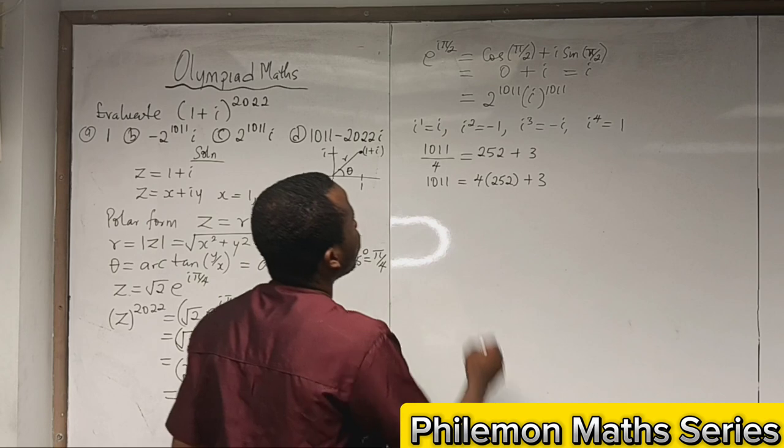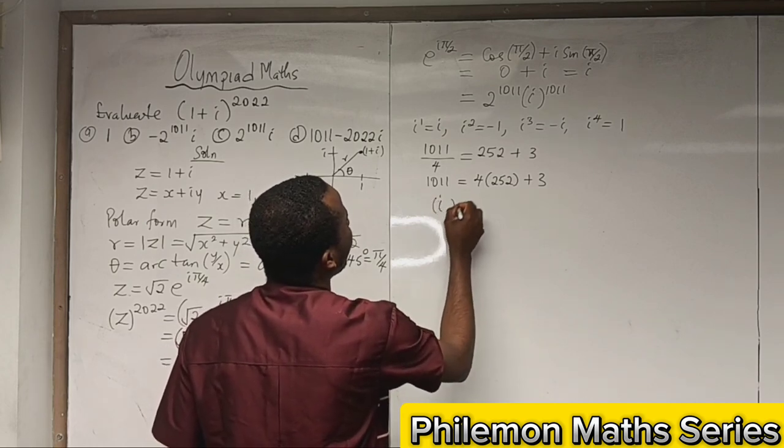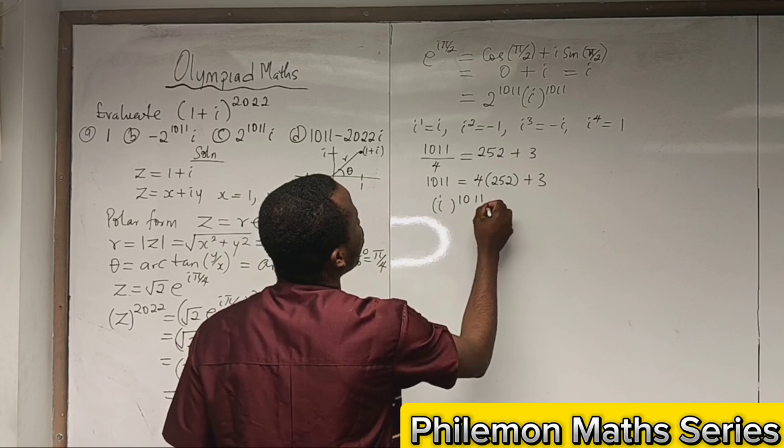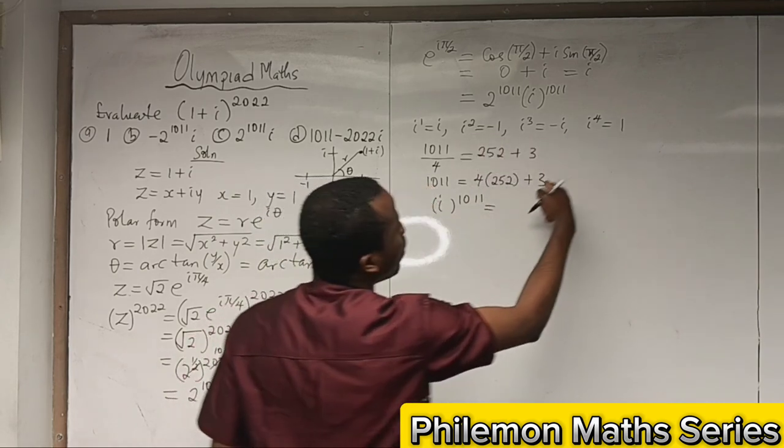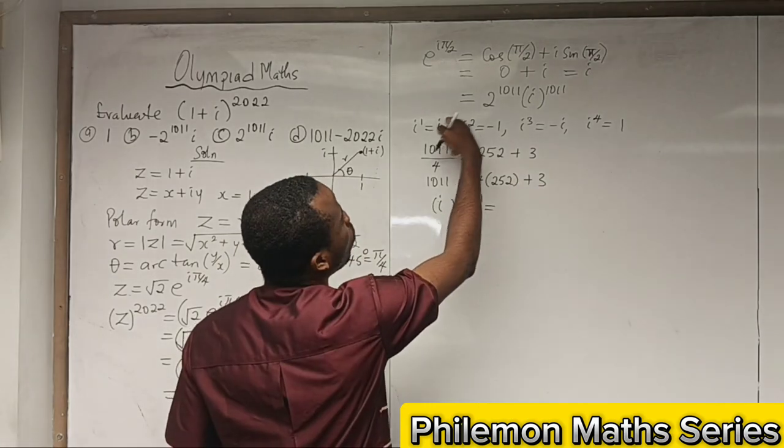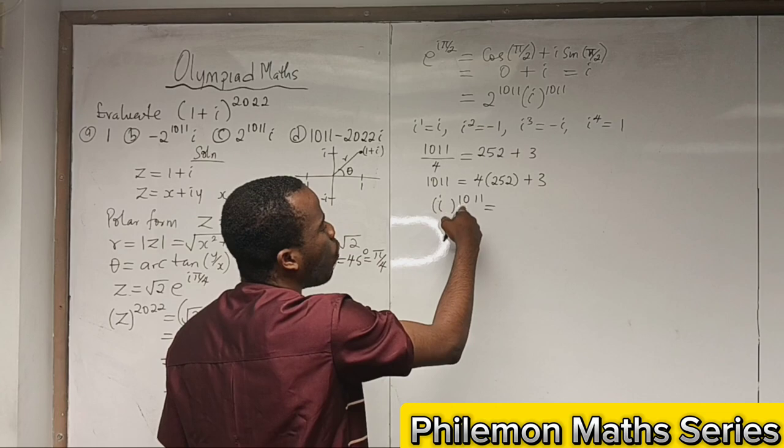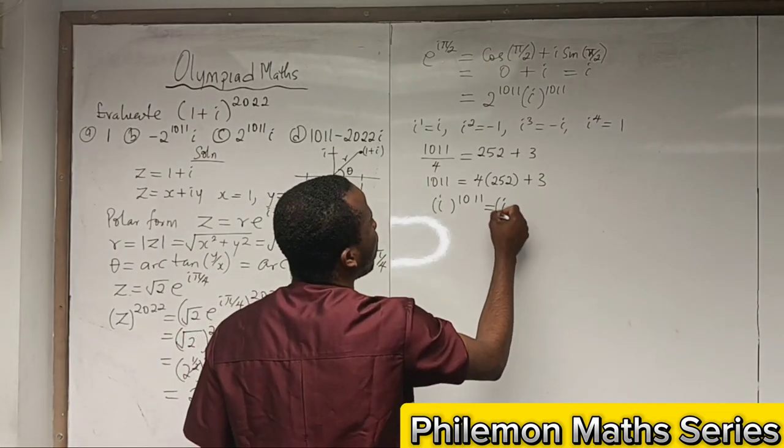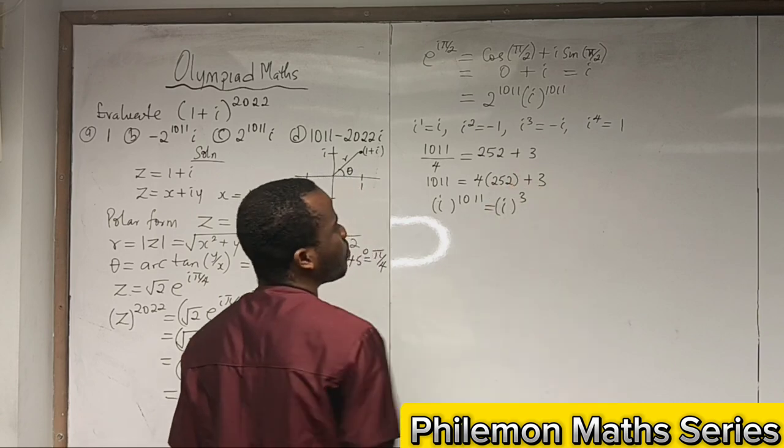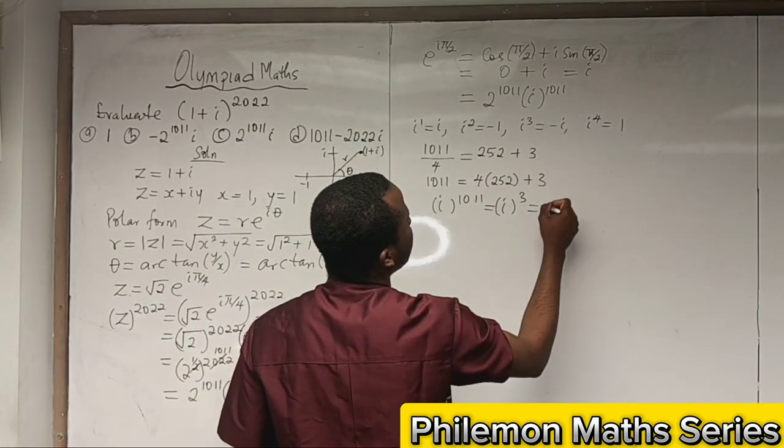Let's go back to this. So it means i^1011 should be the same. Since we have done it in multiples of 4, the remainder will be equivalent to these powers here. So i^1011 will be the same as i^3, which we know from here is -i.